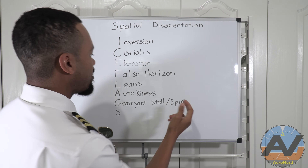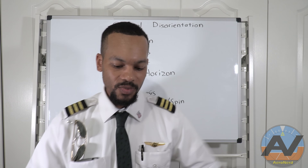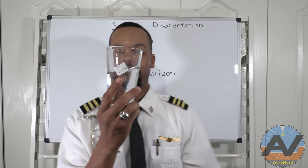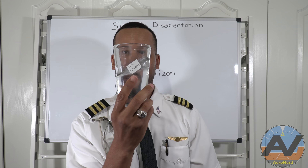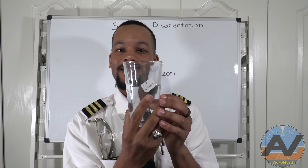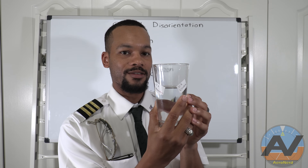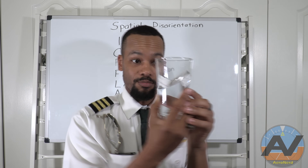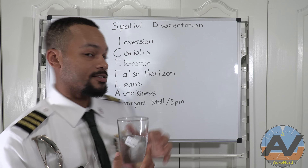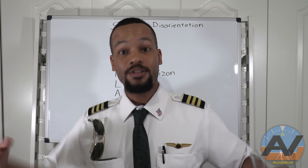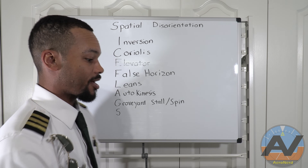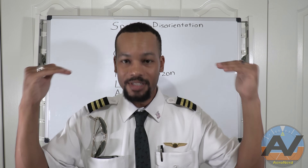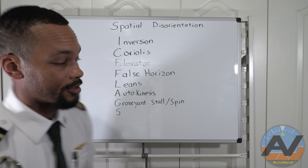Graveyard spin is kind of like what we explained with leans. If you're in an established spin, the fluid eventually stabilizes. As soon as you abruptly recover, that stable fluid gets disrupted — same as in leans — and you think you've overbanked. So you put yourself right back into the same situation, back into the spin again, because your brain wants to get back to that equilibrium state it had before. Unfortunately you end up entering another spin.